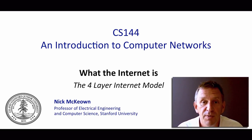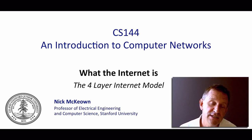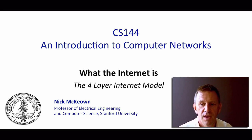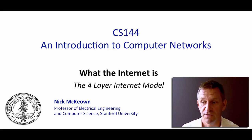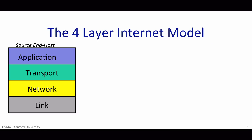For example, applications want to send and receive data without having to worry about the path or route that the data takes across the Internet. And almost all applications want to be confident that their data is correctly received, with any lost or corrupted data automatically retransmitted until it's received correctly. The early Internet pioneers created the four-layer Internet model to describe the hierarchy of operations that make up the Internet, so that applications can reuse the same building blocks over and over again, without having to create them from scratch for every new application.